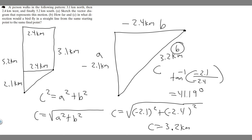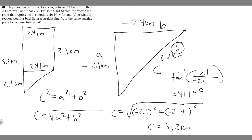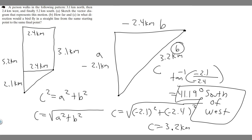This angle describes the direction. The direction is going to be 41.19 degrees south of west — because the horizontal component points west, and we're angled toward the south. So the bird flies 41.19 degrees south of west, and the distance it travels is 3.2 kilometers. Hopefully you found this video useful.